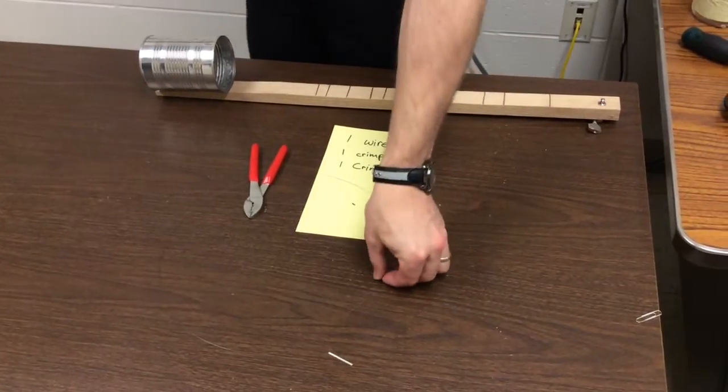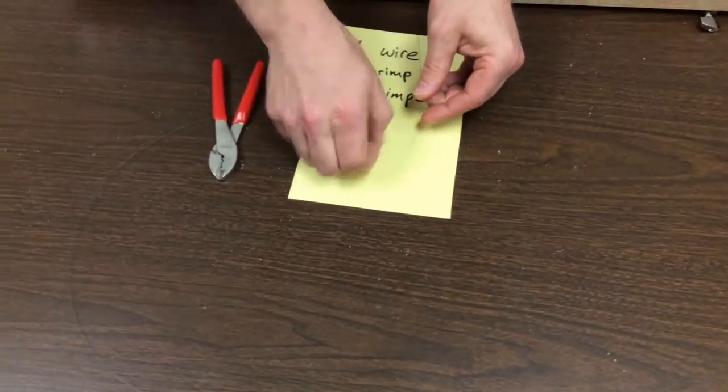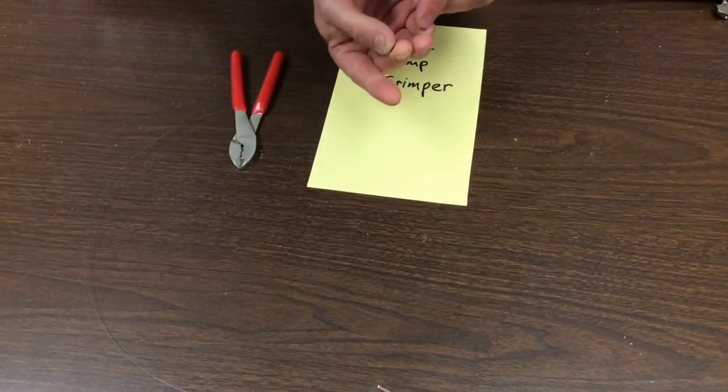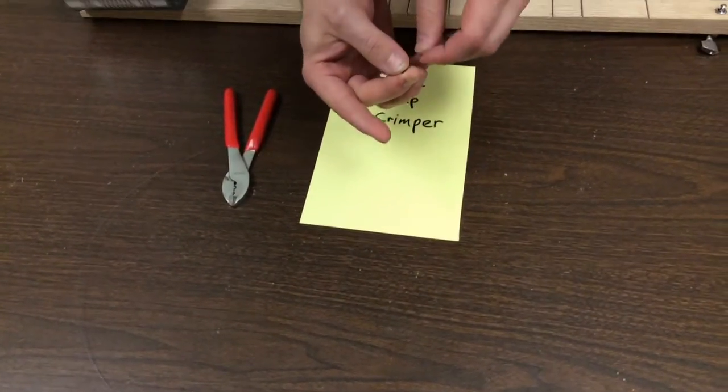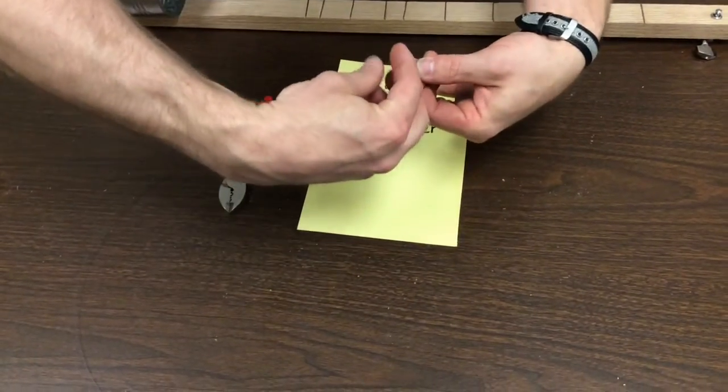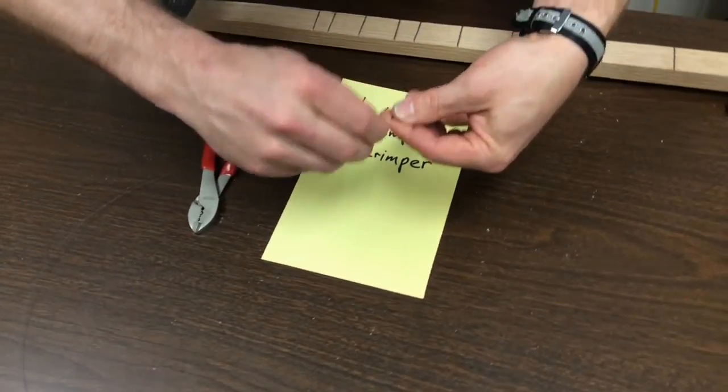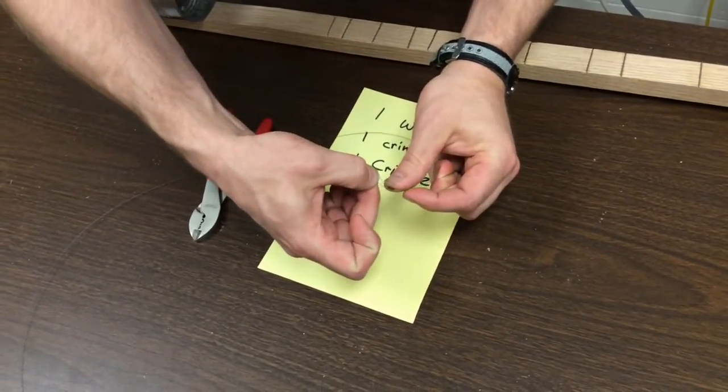So the first thing you're going to want to do is find the end of your wire. You're going to place the crimp over the wire, then loop that wire and send it back through the crimp.